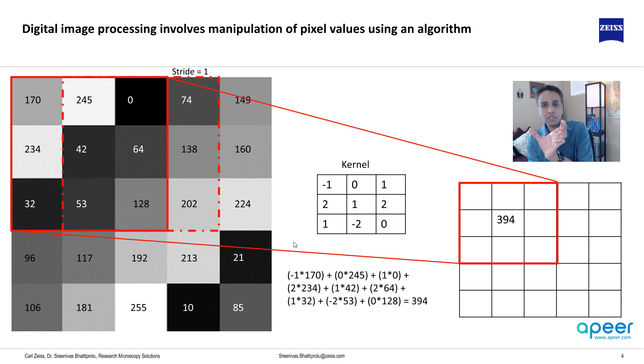So it moves by one step. It does the same math again, moves, same math, moves, same math, and so on, and it repeats the entire process. You can do it by hand if you want, but then if your image is 1,000 by 1,000 pixels, just imagine how many times you have to do it. And computers are fast at doing it. That's why we're using computers. So this is, in summary, this is what digital image processing is.